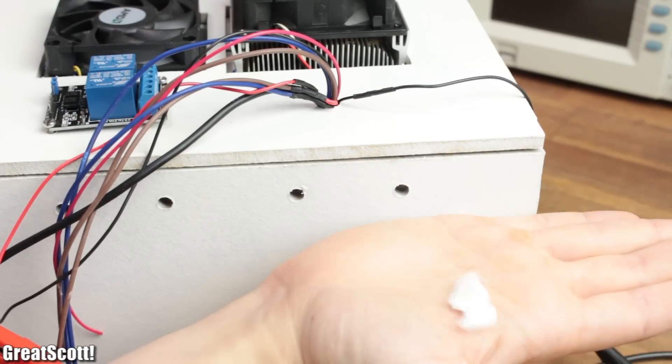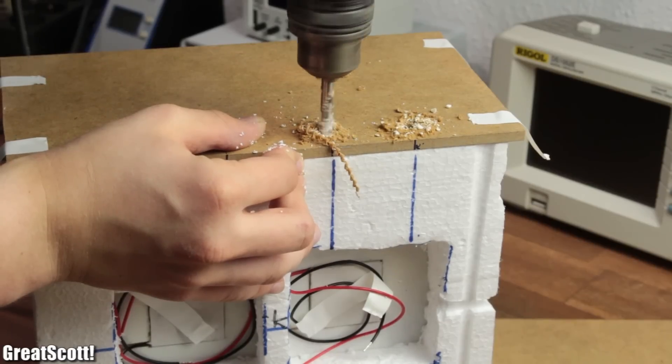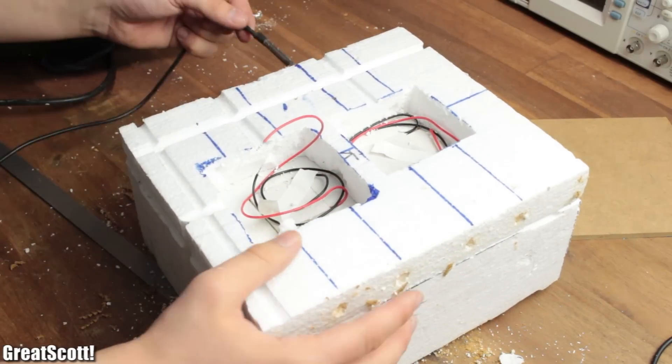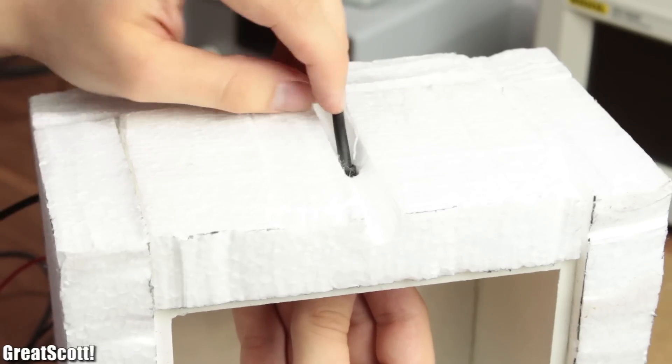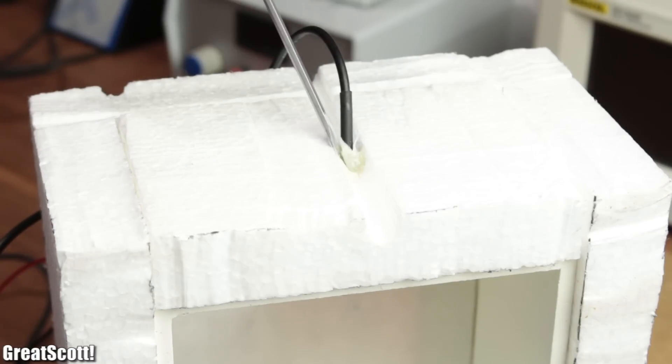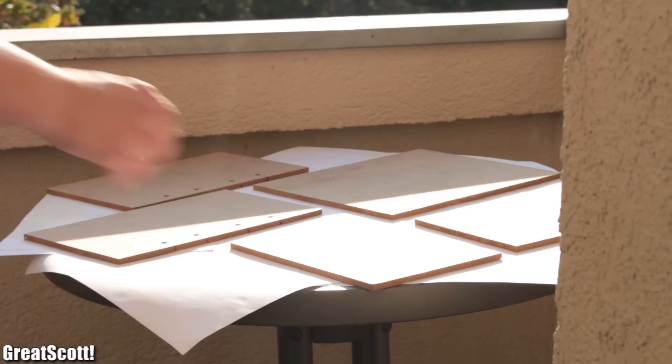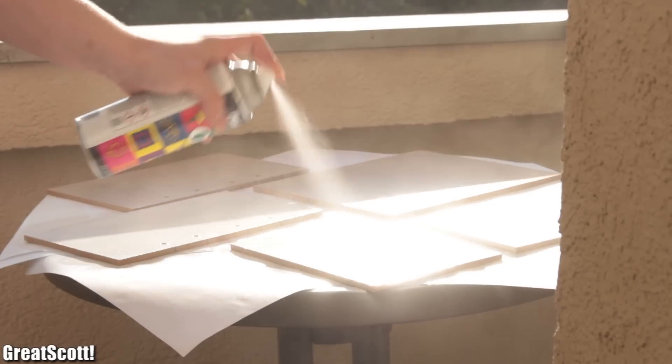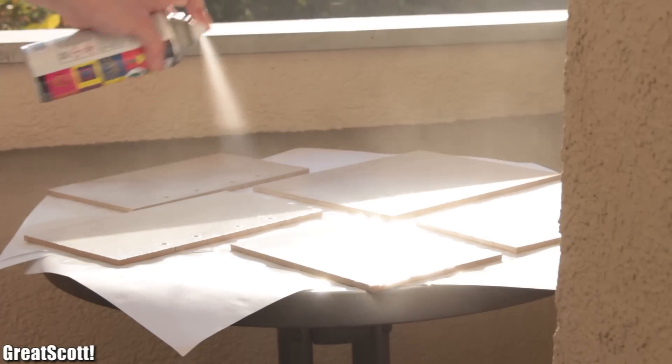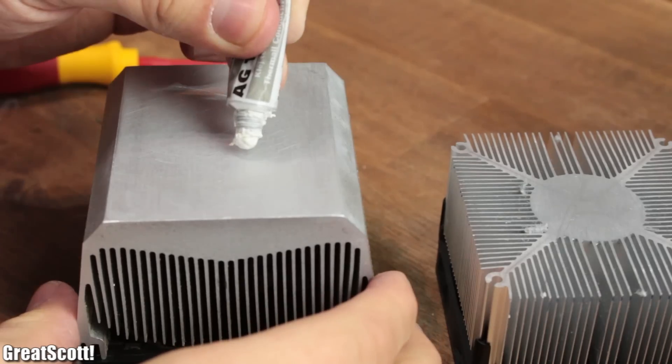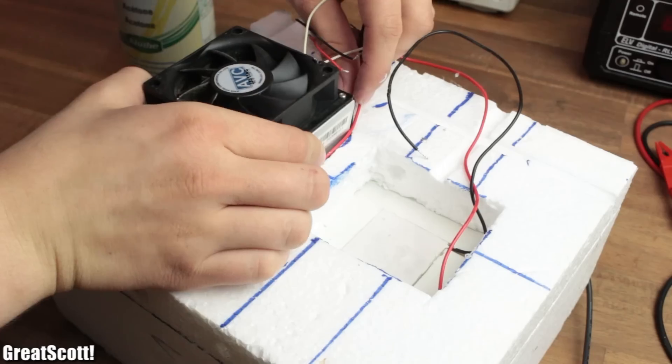These will later let the warm air of the heatsinks escape. After they were drilled, I enlarged them a bit with my temperature sensor, which then got secured in its hole with the help of two component adhesive. Before I went outside again to spray paint only one side of the outer layer white, I mounted the CPU heatsinks onto their Peltier modules.